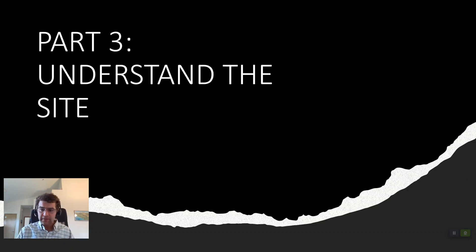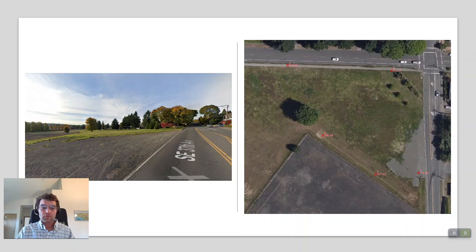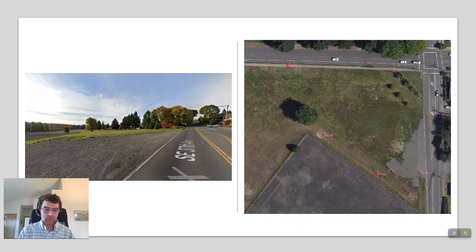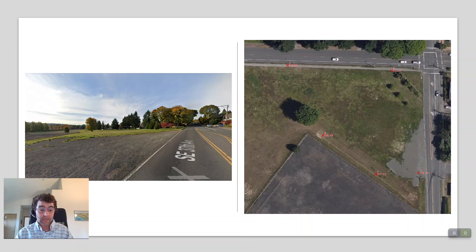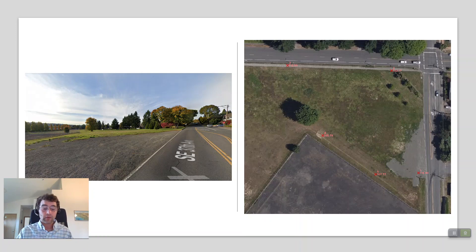Part three: understand the site. Like that Olympic skier, let's envision how we're going to fly. Take a look at the site and really picture where the elevation changes are, where the software is going to have a hard time understanding contrast and elevation, and where the most important spots are — where do we want the high-accuracy data to be? For this site, I took points along the sidewalk and at a low point where there was a bit of a ditch. Creating a game plan before you go out and fly is very important.